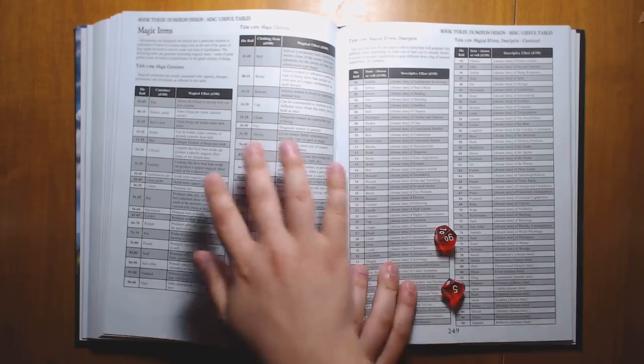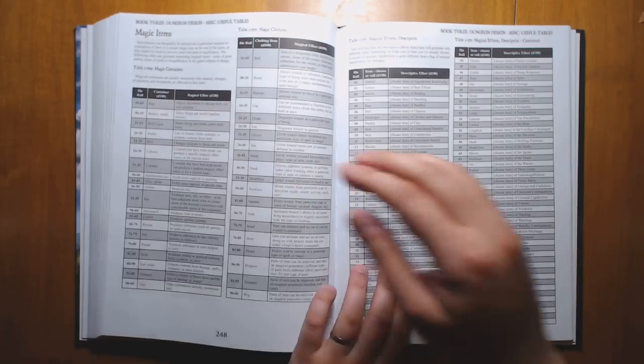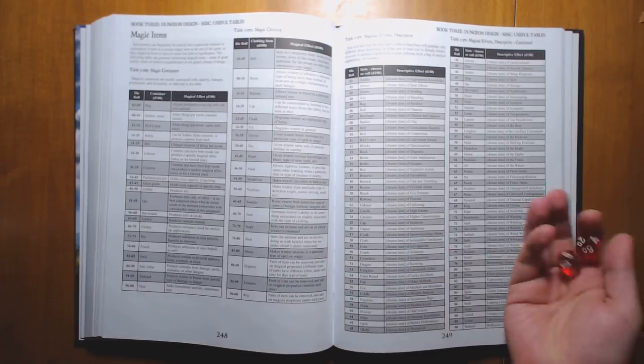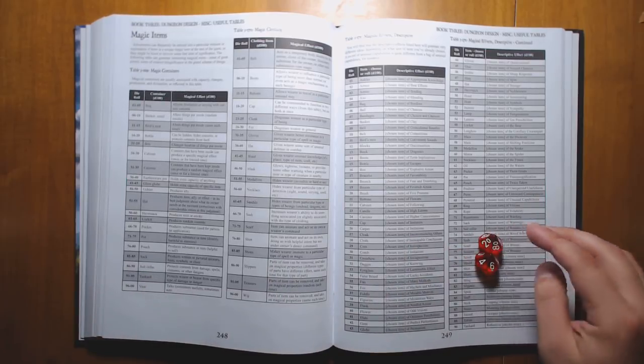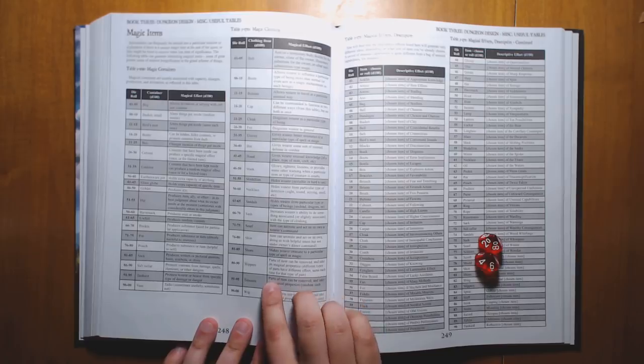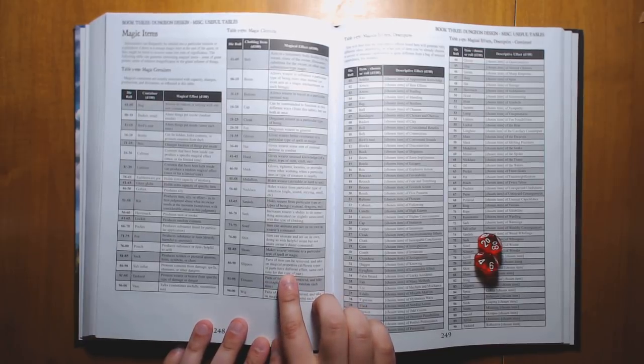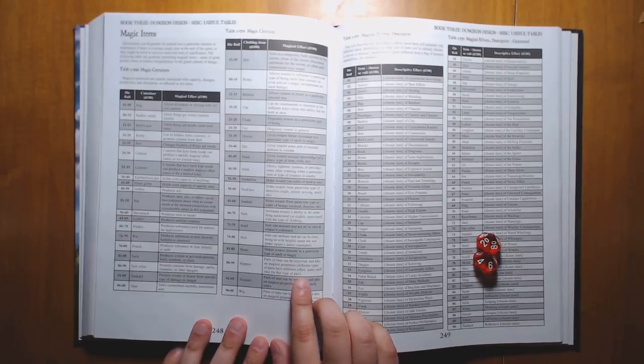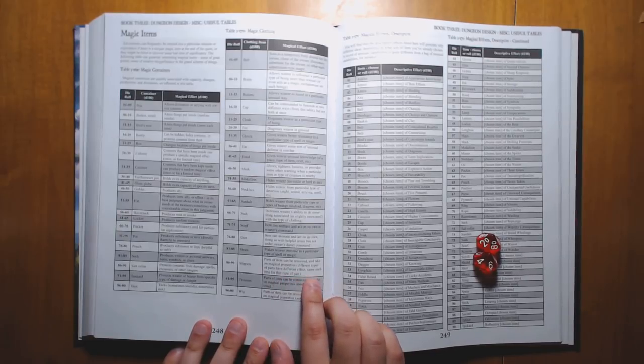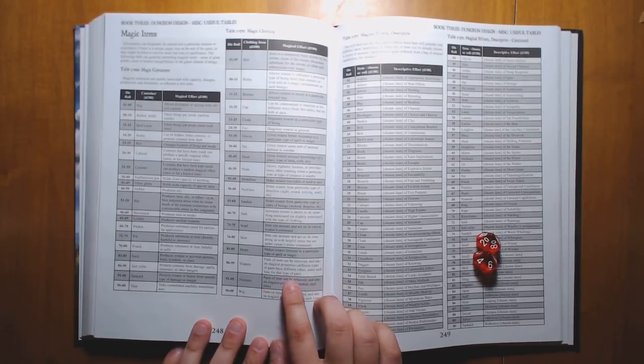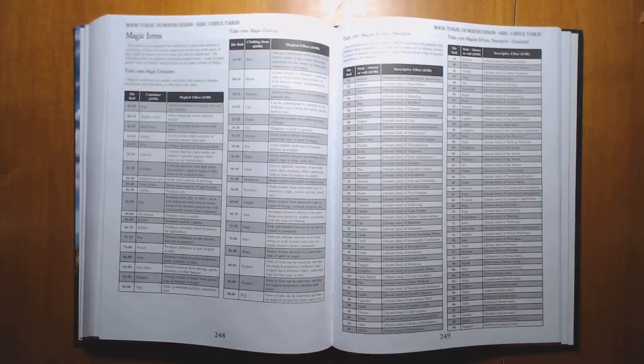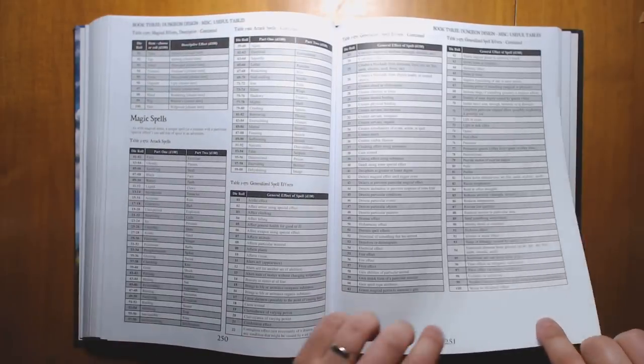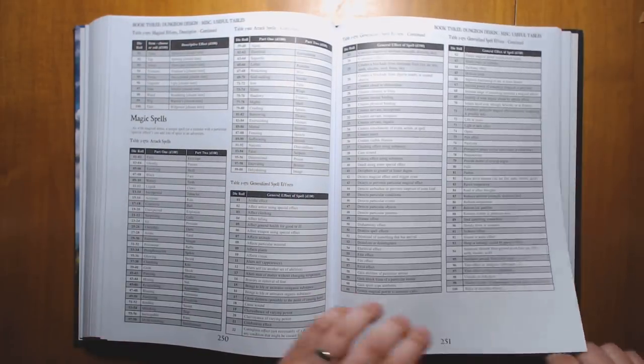So magic item, oh this is the types of magic containers. Let's see what we got here. 95, trousers. What's going on with our trousers? Parts of the item can be removed and take on magical properties. Different types of parts have different effects. So maybe you can take out the pockets of these trousers and they do something unique.